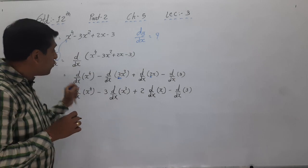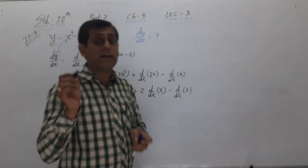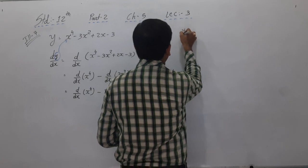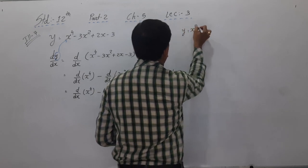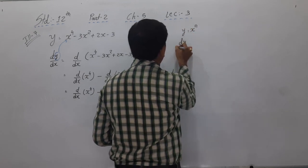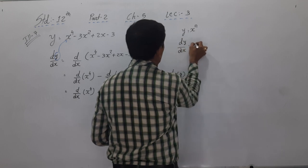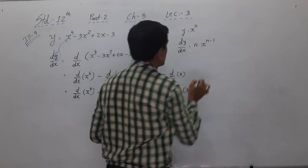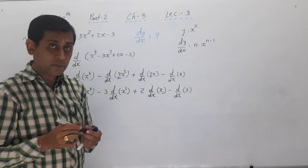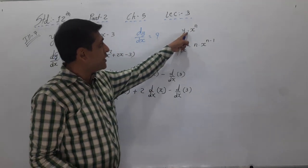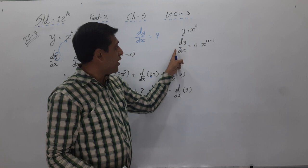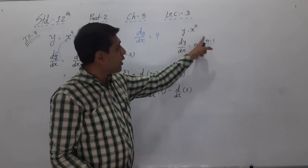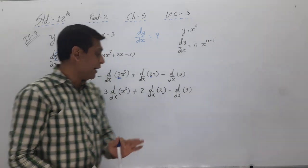So the final answer for illustration 7 is: dy/dx = 4x³ - 6x + 2. This is a 2-mark sum. From the formula, x⁴ differentiates to 4x³ directly, 3x² differentiates to 6x (multiply power 2 by coefficient 3 = 6, power becomes 1), 2x differentiates to 2, and the constant gives 0.